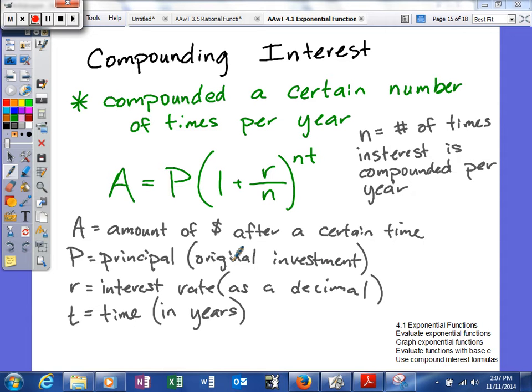R is your interest rate, but you must write that as a decimal. T is your time in years. And N is the number of times interest is compounded per year. So we'll look at an example and see if we can't calculate how much interest we might have.